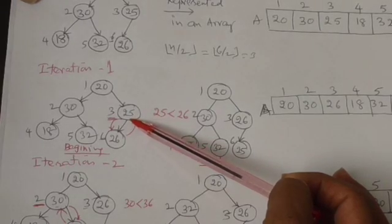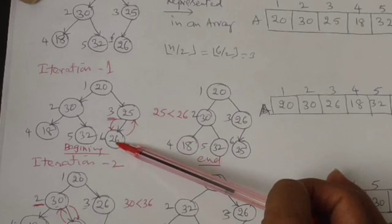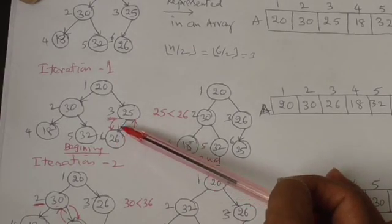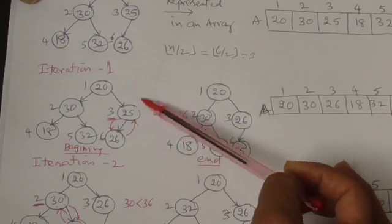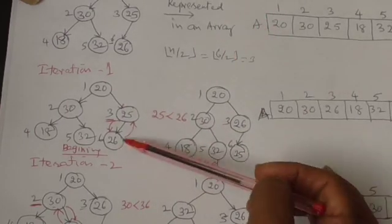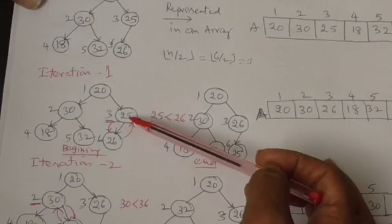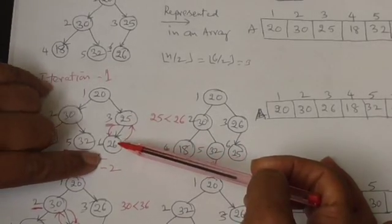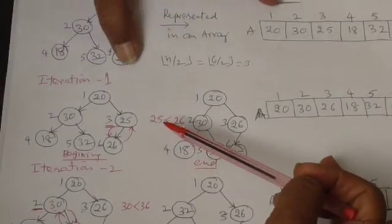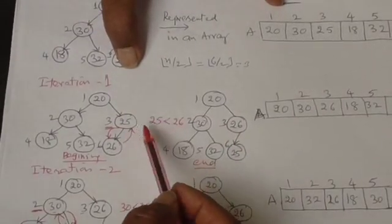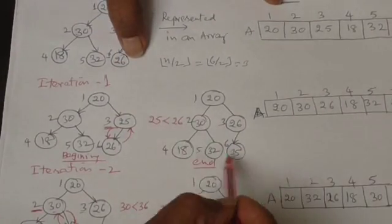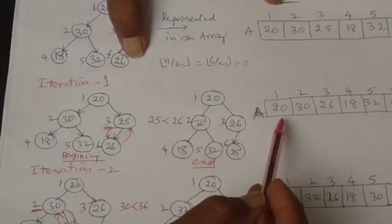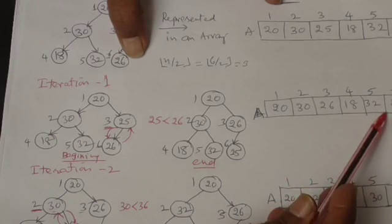So here its child, the only child it has, is 26. As per the order property, if you consider only this particular one, this root should be 26 and this should be 25. Therefore I change it. So it is 25 less than 26. Therefore I change it and this is how it is arranged. So again, in the form of array, it is present like this.